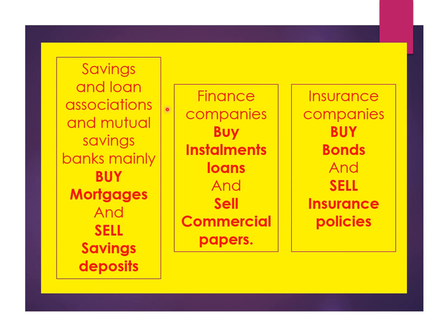Savings and loan associations and mutual savings banks mainly buy mortgages and sell savings deposits. Finance companies buy installment loans and sell commercial papers. Insurance companies buy bonds and sell insurance policies.